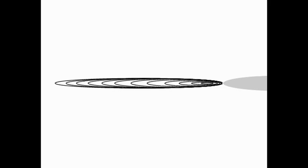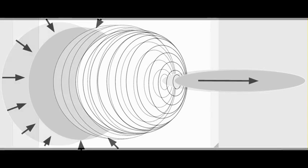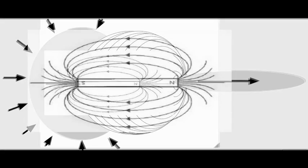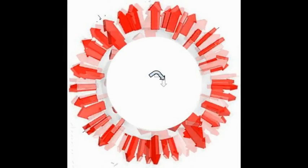This field has a very similar shape to a magnetic field around a bar magnet. When the electron spins, it spins into a disk. When the spinning disk rotates, it forms a sphere.